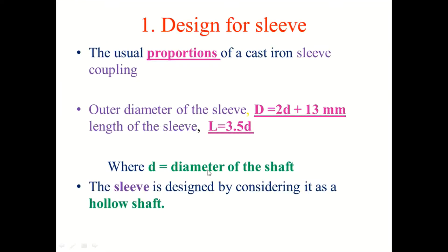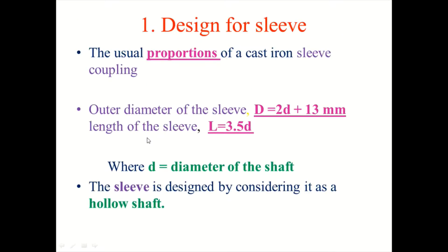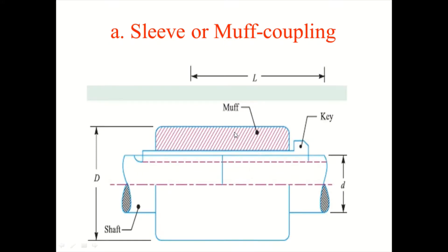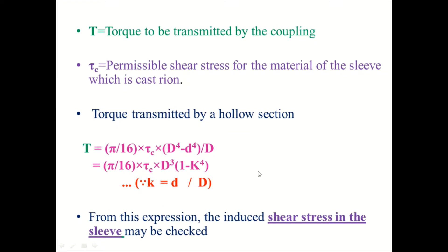This is the design for sleeves. These are the properties of cast iron for the sleeve. Cast iron properties are also available in the design data book. This is the outer diameter of the shaft, capital D. You can calculate using this formula for the length, which is shown here. This is the diameter of the shaft and the torque you can calculate for the shaft. This data and formulas can be obtained from the PSG design data book.